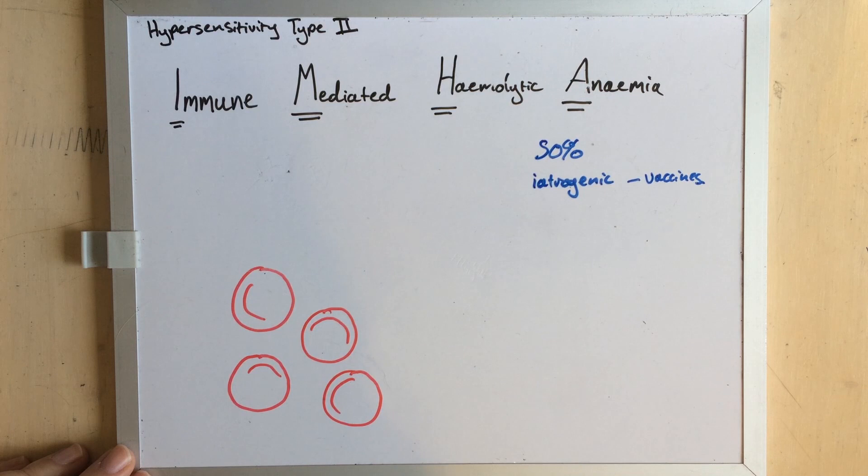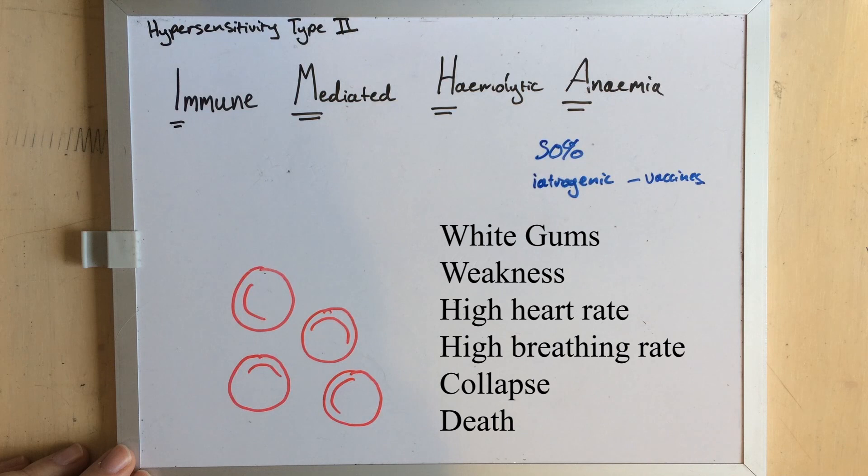These animals often present with severe anemias and the associated symptoms like white gums, weakness, a high heart rate, panting or collapse, but they've not bled anywhere. Their blood volume and proteins are usually near normal.